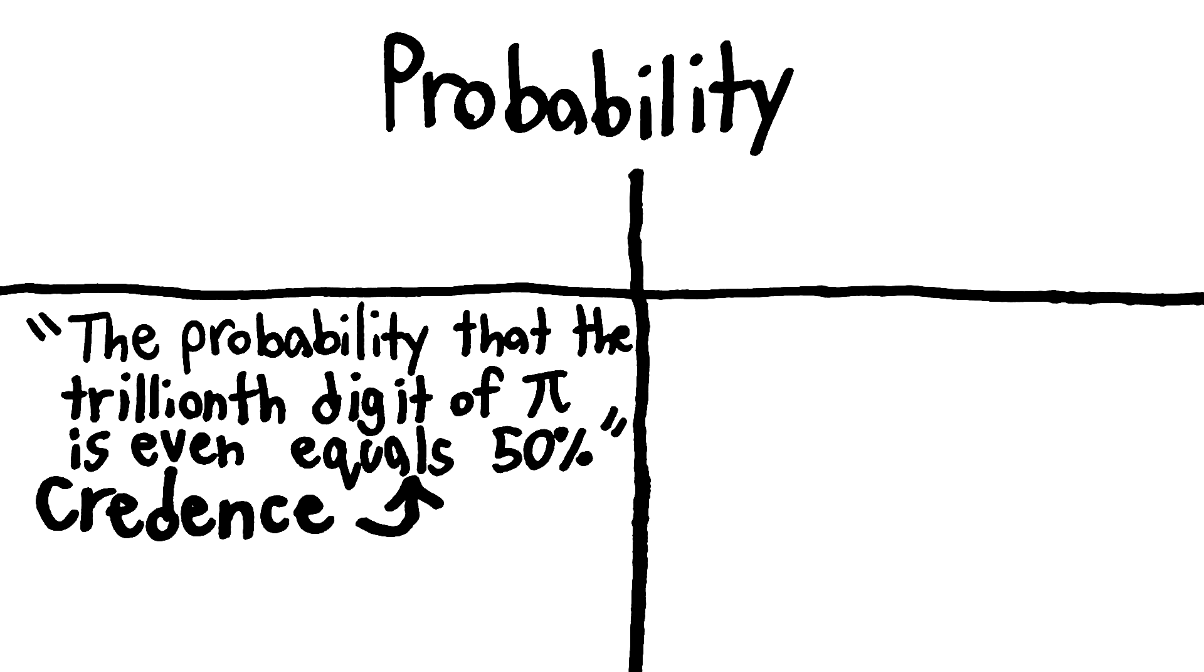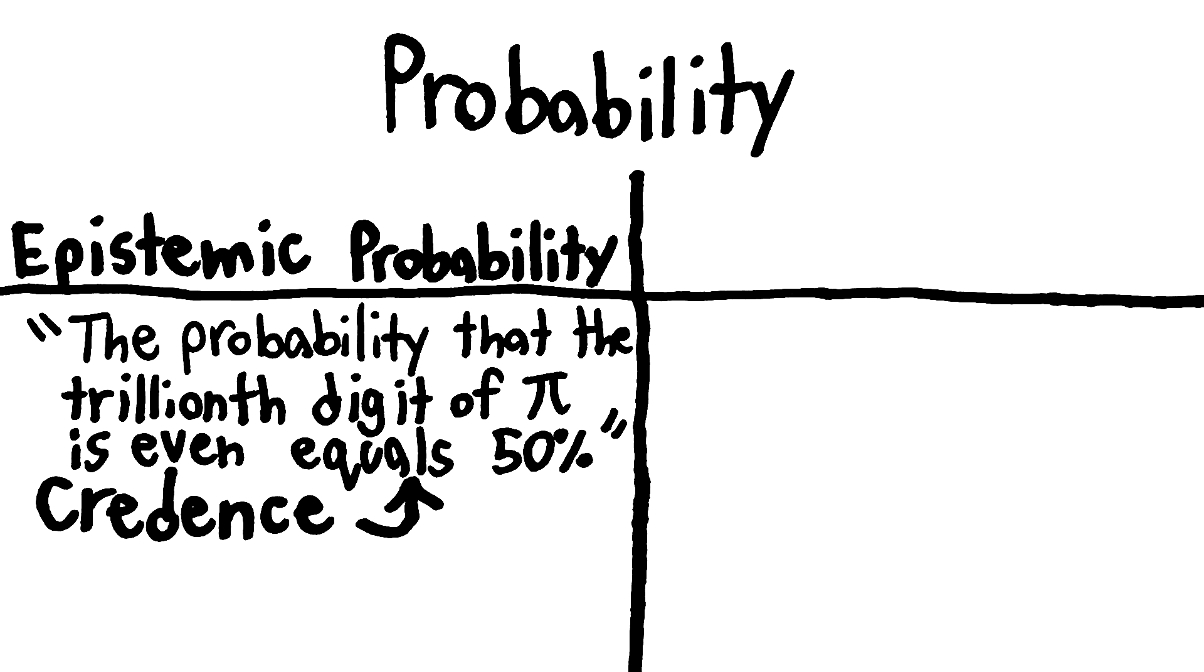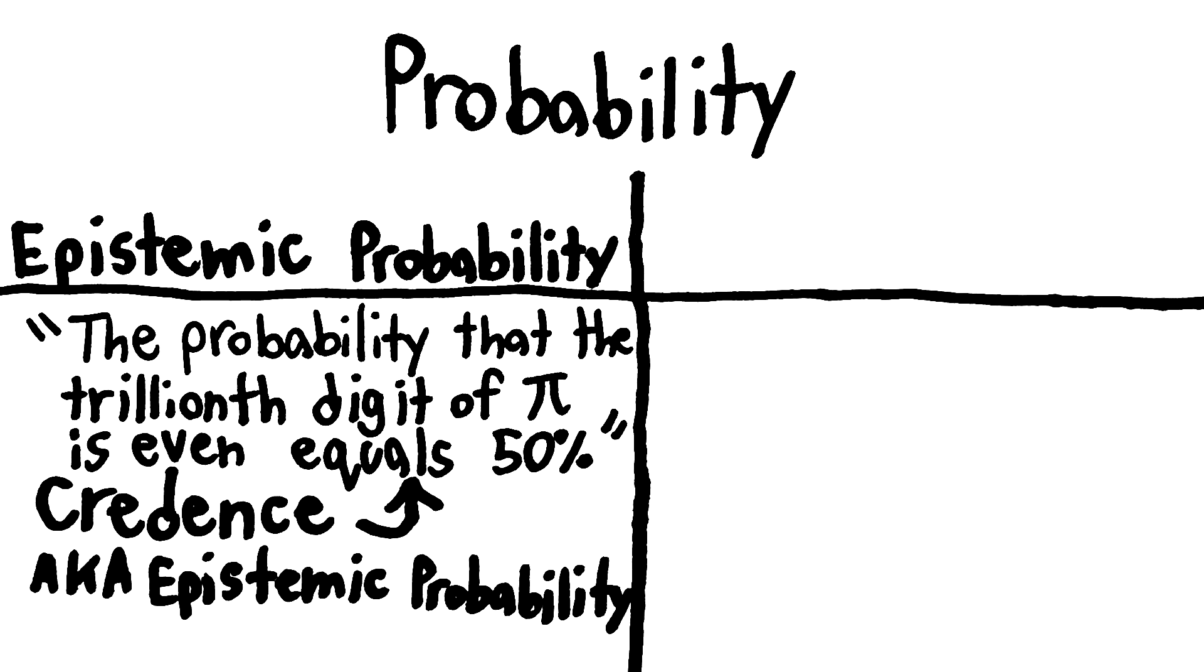This kind of probability is called epistemic probability. We can treat it as a synonym for credence.